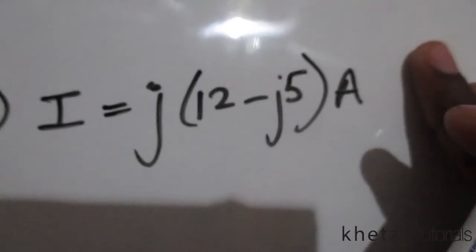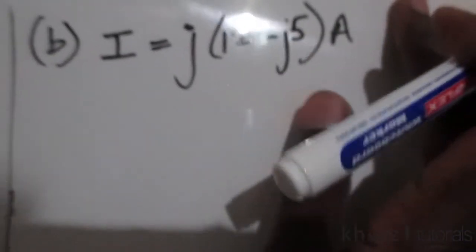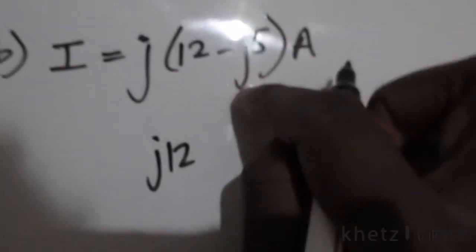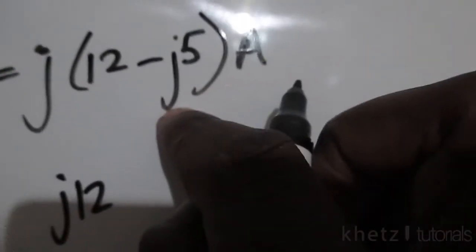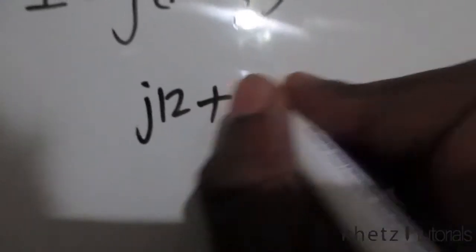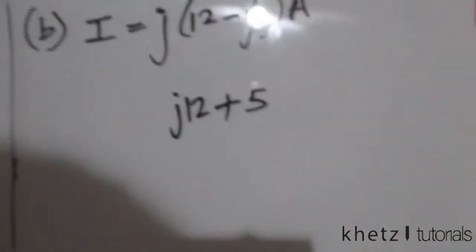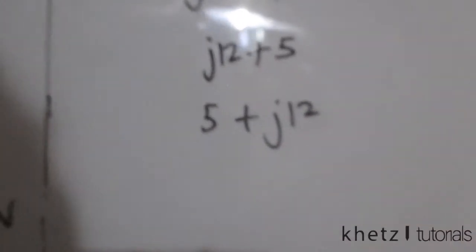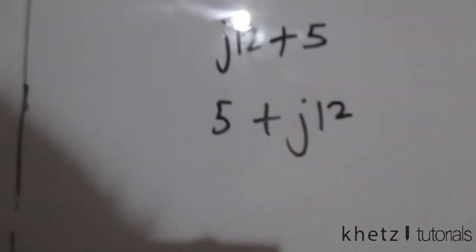The first thing you'll do is to multiply through, so j multiplied by 12 is j12, and j multiplied by j is -1, and the -1 multiplied by this negative will lead to a positive, so we have +5. So the complex number is therefore 5 + j12.